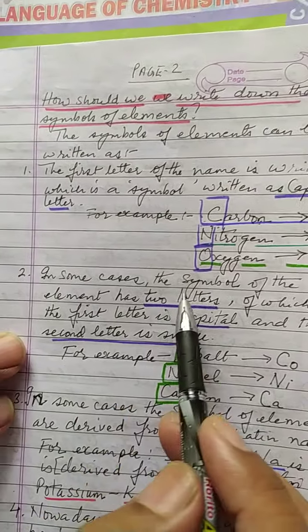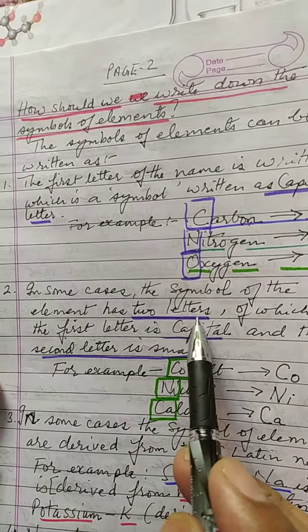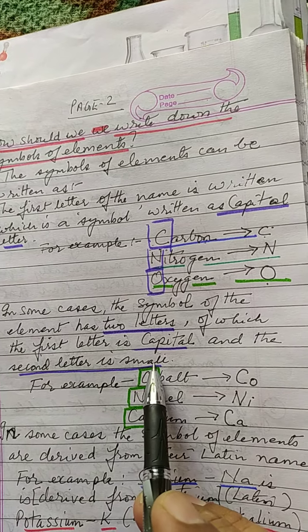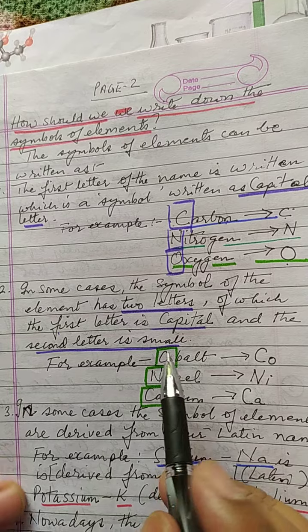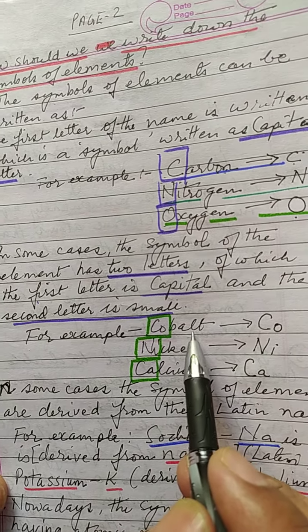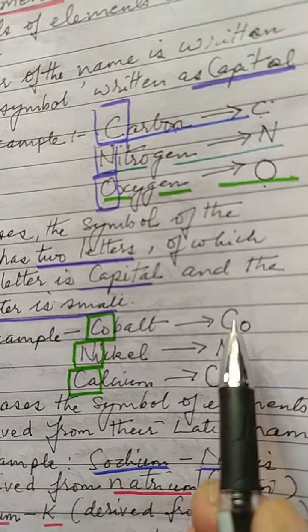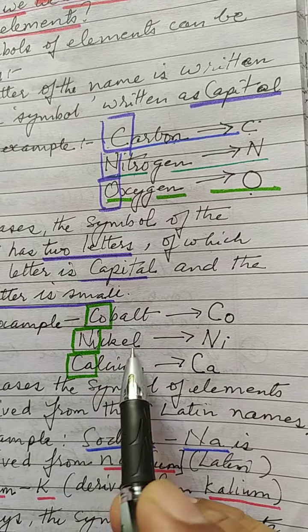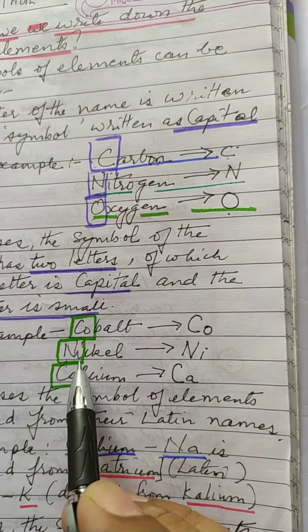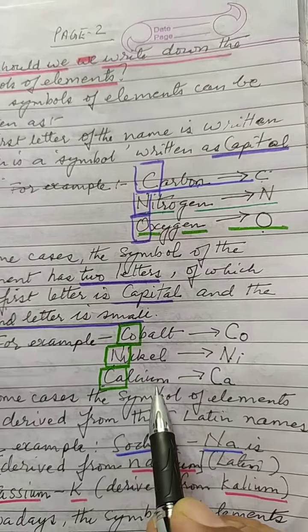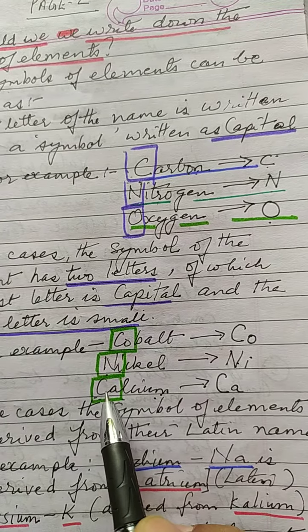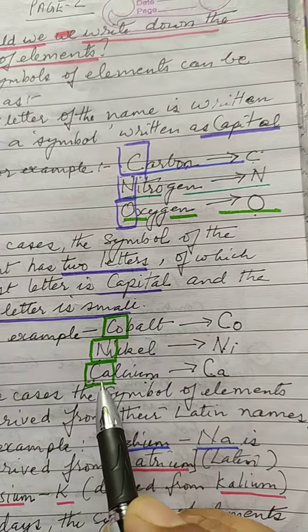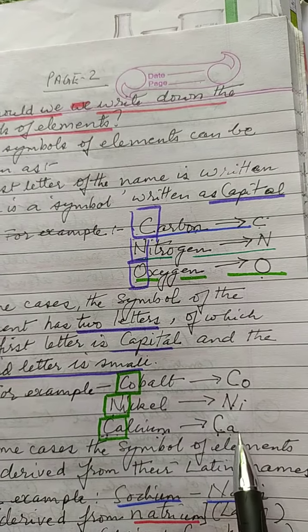In some cases the symbol of the element has two letters, of which the first letter is capital and the second letter is small. For example, in cobalt we write the symbol as capital C and small o — Co. In nickel we write capital N and small i — Ni. In calcium, the first letter is capital C and then small a — Ca.